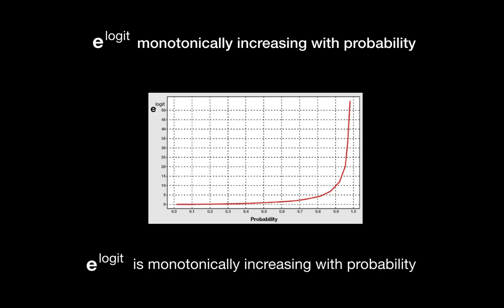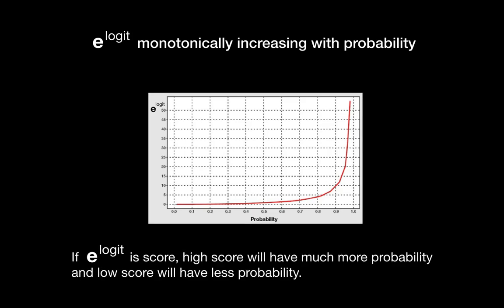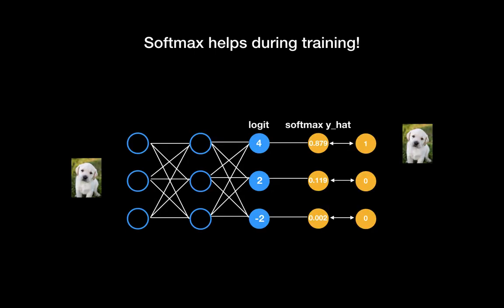As you can see from the chart, e to the power of logit is also monotonically increasing with probability, so we can use it as a score from the deep learning model. A high score will have much more probability and a low score will have less — this is also a benefit of softmax. For multi-class classification training, we normally use one-hot encoding for the target labels, for example the dog label is represented as [1, 0, 0].